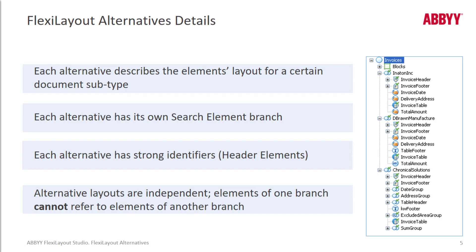This is what FlexiLayout alternatives look like. At our top level we've got Inetan Inc., and then that was cloned for D-Bron Manufacture, which was cloned for Chronicle Solutions. Each alternative has its own search element branch, so you can see they've each got their own header and footer. Each alternative must have strong identifiers. Alternative layouts are independent — elements of one branch cannot refer to elements of another branch. Think of them as firewalled.